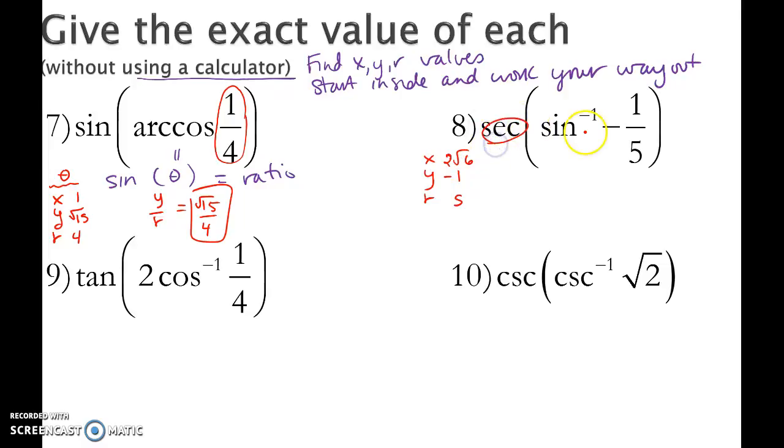And now, I want to find the secant. So remember that sine inverse of a ratio gives me an angle. These are the x, y, r values for that angle. And now, I want to find the secant of that angle, which is r over x, or 5 over 2 root 6. After rationalizing, I get 5 root 6 over 12.